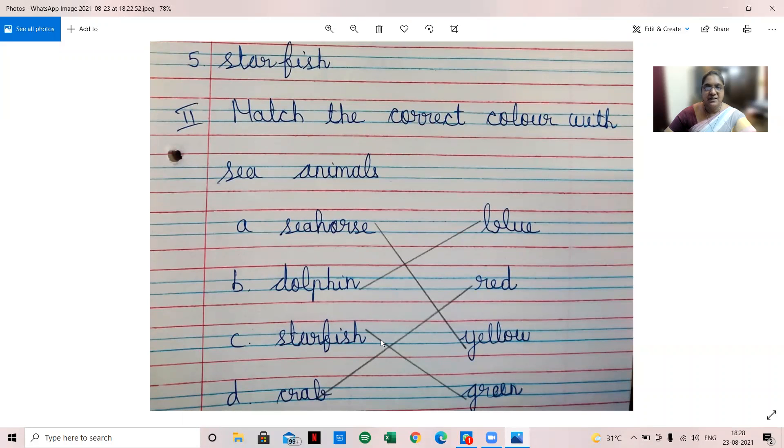Now you have to match like this, and also you should know how to write the alphabets. See here, A is seahorse, that is yellow. So here what you should write? You should write Y. Yes, very good. You are growing up, so you should know to write that also. I am writing Y here.